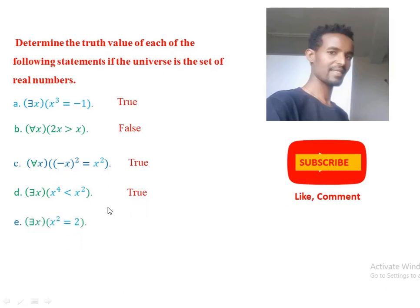Statement (e): there exists x such that x squared equals 2. For example, if x equals the square root of 2, which is a real number, then (√2)² = 2, and 2 equals 2. Therefore this is true. As a result, the statement there exists x such that x² = 2 is true.